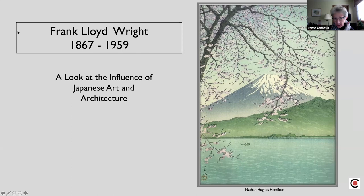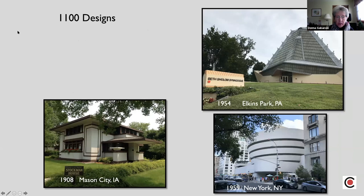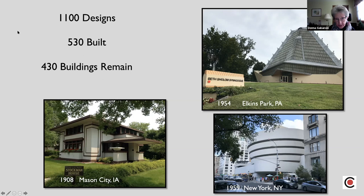Frank Lloyd Wright was born in 1867 and died in 1959. During that time he had a very prolific career. He did 1,100 designs, 530 were built, and 430 buildings remain. He did a variety — mostly residential architecture.